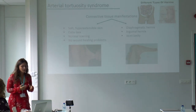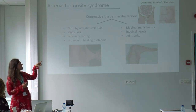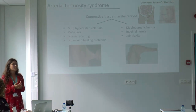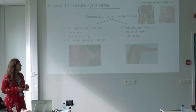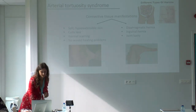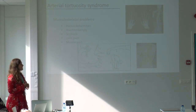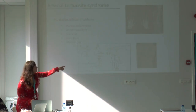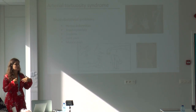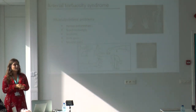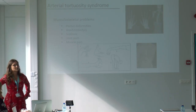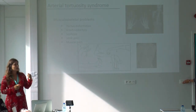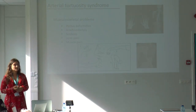A second manifestation are herniations. Patients can have diaphragmatic hernias and inguinal hernias. In herniation, a tissue or organ abnormally exits through the wall of the cavity in which it is located — like a small piece of bowel coming out. They also have joint laxity. We also identified several musculoskeletal problems: patients can have pectus deformities, long fingers which we call arachnodactyly, and problems with the spine such as scoliosis. Many patients also have joint pain and muscle pain.